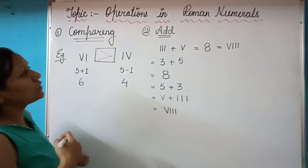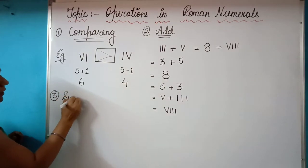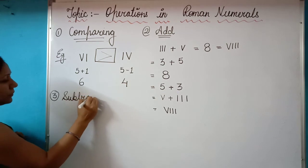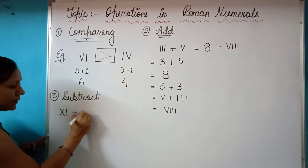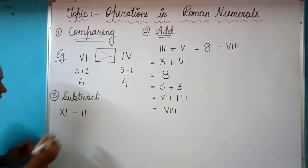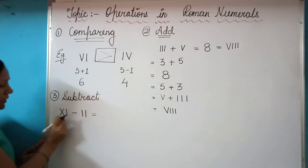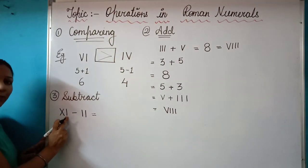In the same manner, you can also subtract any value. Like for example, if we have to subtract the values and suppose subtraction is like this XI minus II. If it is given like this XI minus II, let us convert this. The symbol for XI: X means 10 and I means 1.